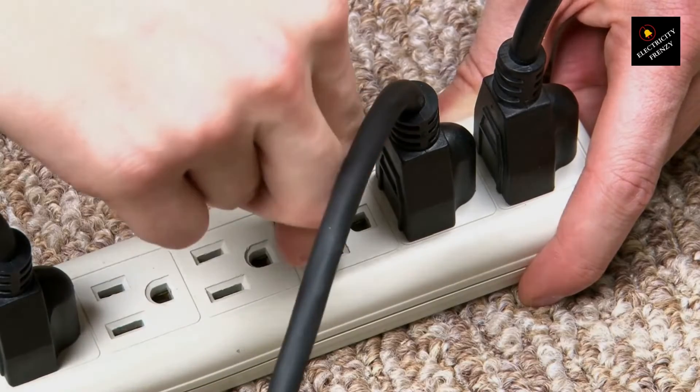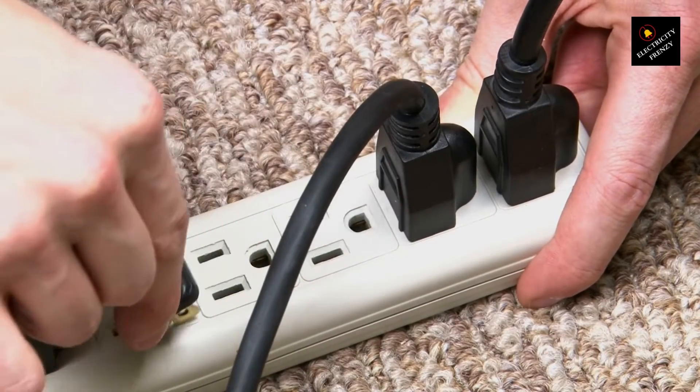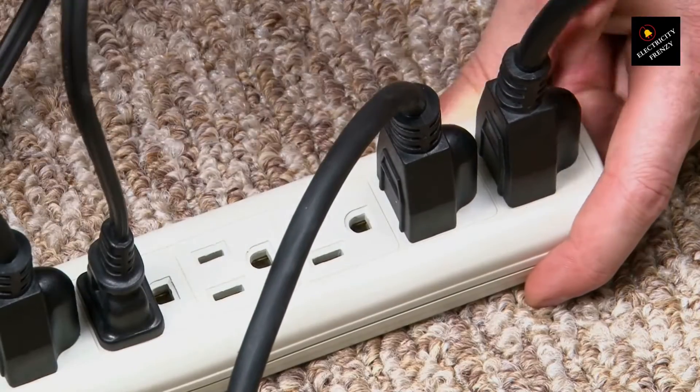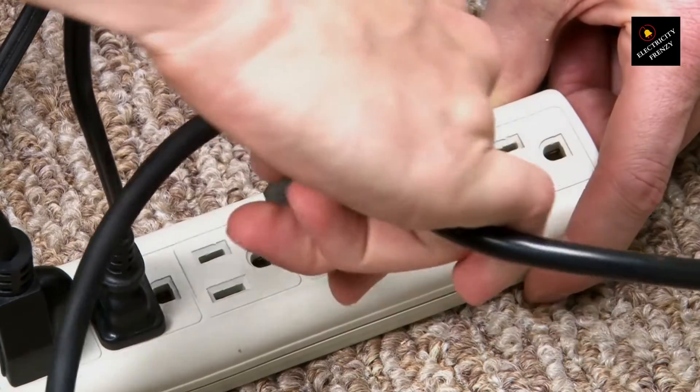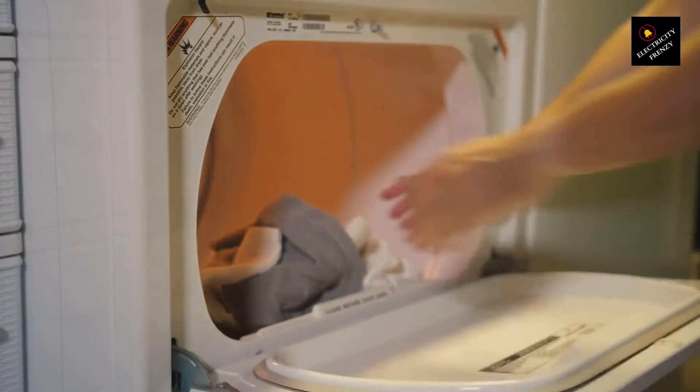Overloaded circuit: If the circuit that your dryer is connected to is shared with other high-power appliances, such as air conditioners, refrigerators, or other large appliances, running them simultaneously can exceed the circuit's capacity. This can lead to an overload, causing the circuit breaker to trip.